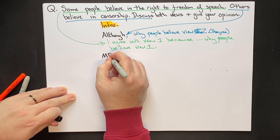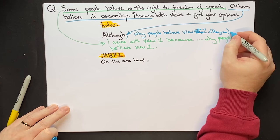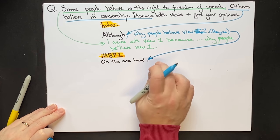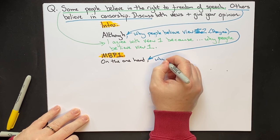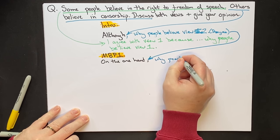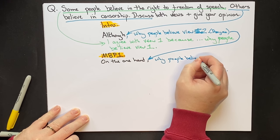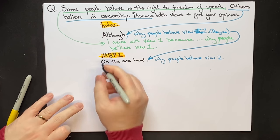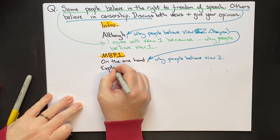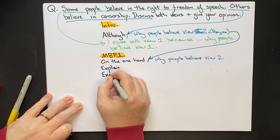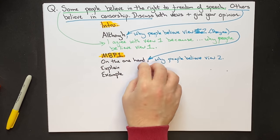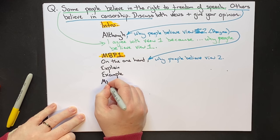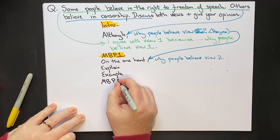Then we move on to main body paragraph one. We take why people believe view two and put it here — why people believe view two — then we explain why they believe it and give an example. So all we're doing is saying: why do other people believe in censorship, for example?